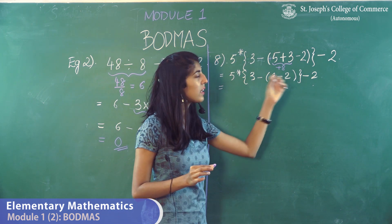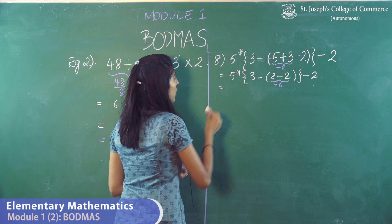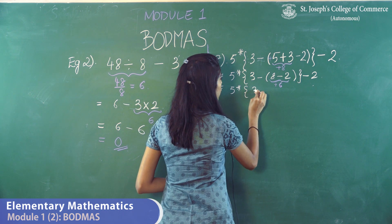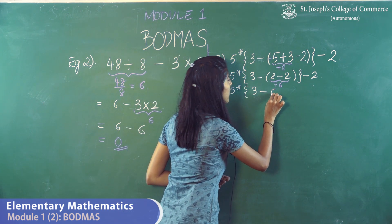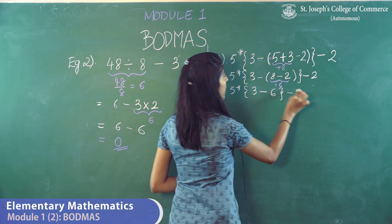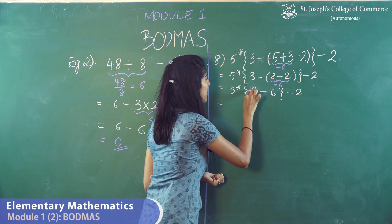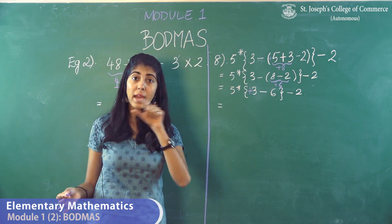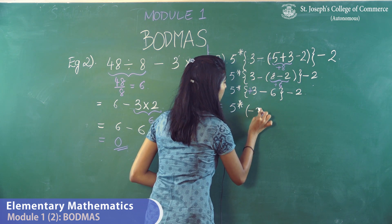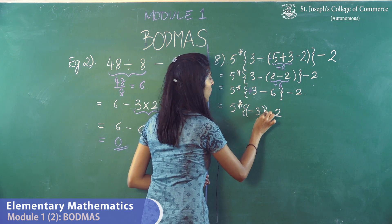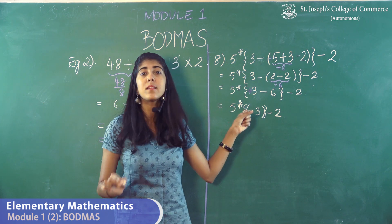Next, subtract inside the bracket: 8 minus 2 equals 6, but it is plus 6. However, outside the bracket there is a minus sign, so minus into plus 6 gives minus 6. Now solve the curly bracket: inside we have plus 3 and minus 6. Subtracting gives minus 3. We keep the bracket notation because there is a multiplication sign outside and a minus sign attached.